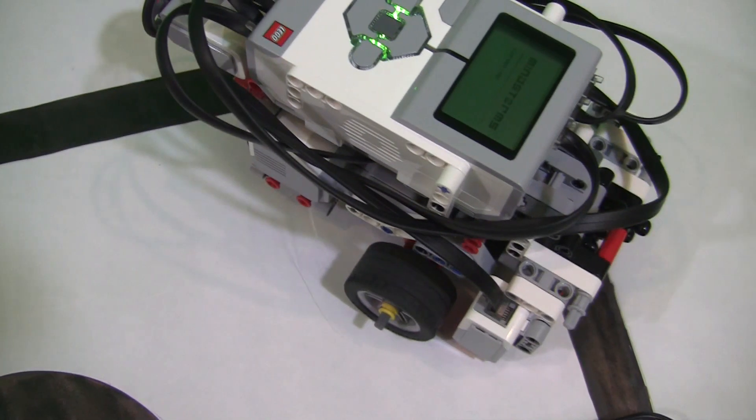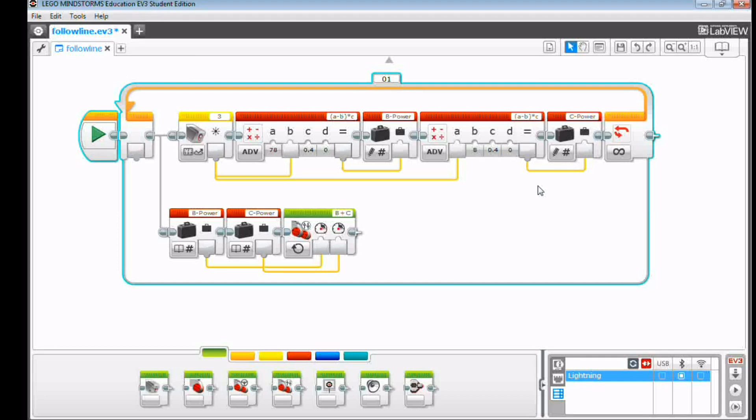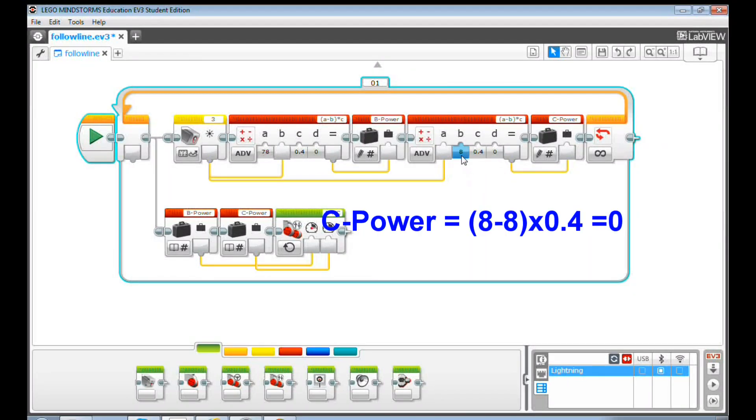but it doesn't turn enough. When the color sensor was at the middle of the black line, the RLI value equaled 8, and the power passed to the C motor equaled 0.